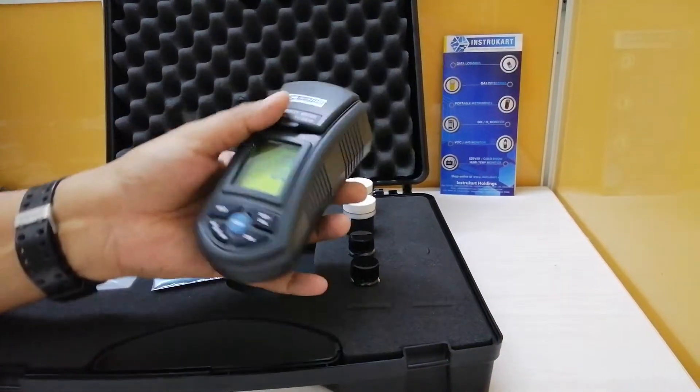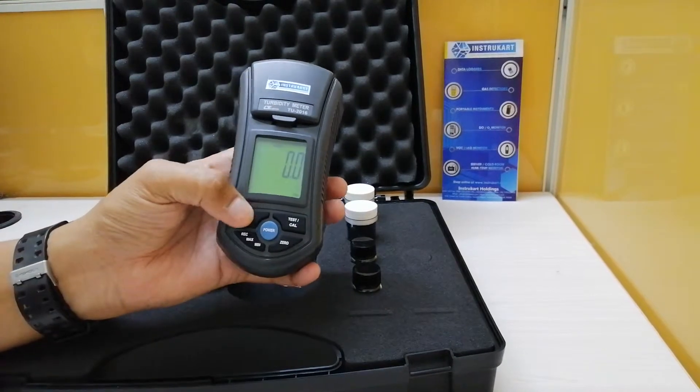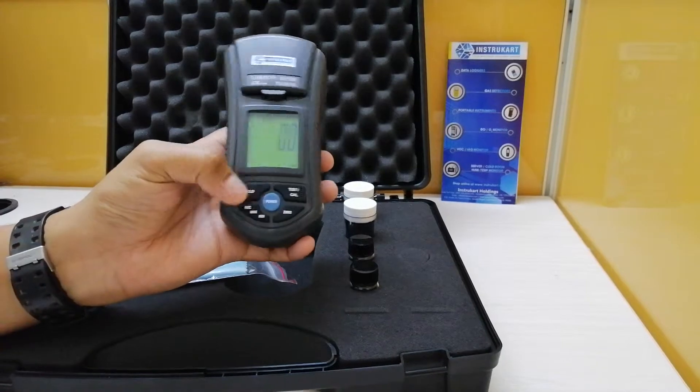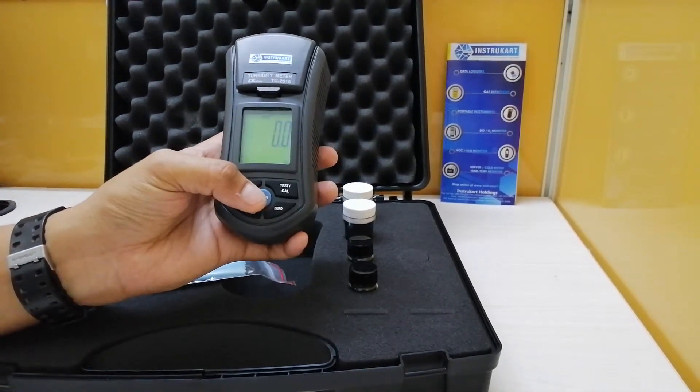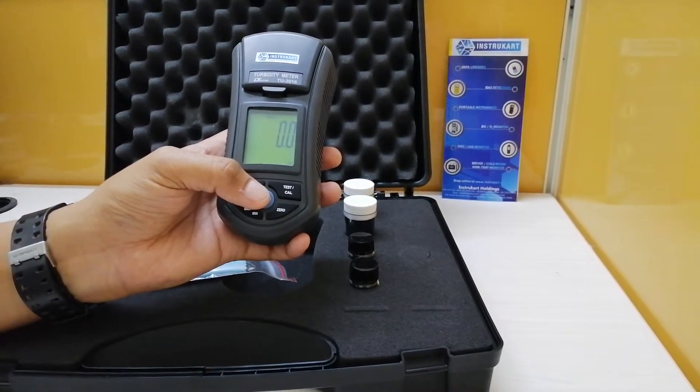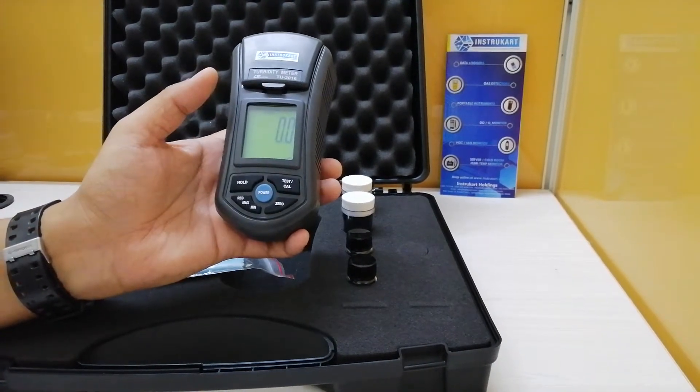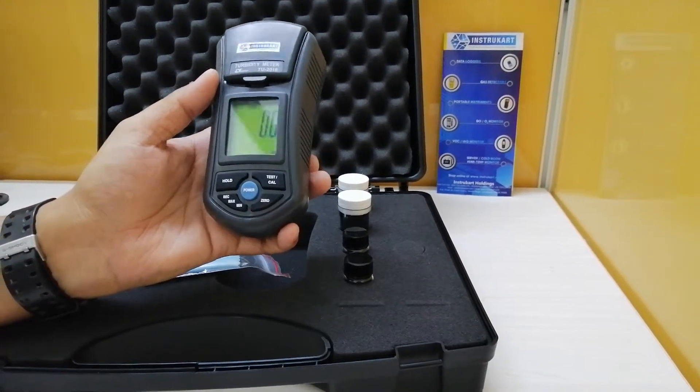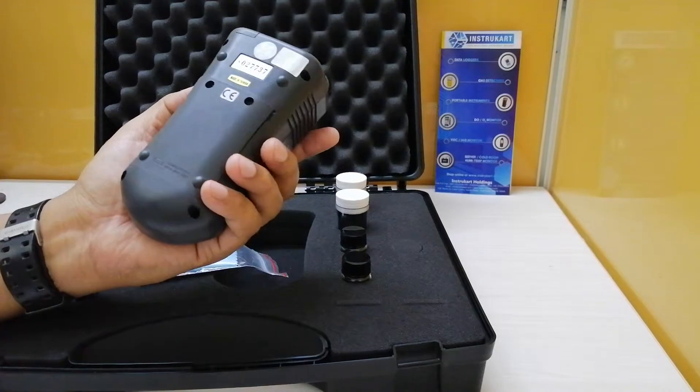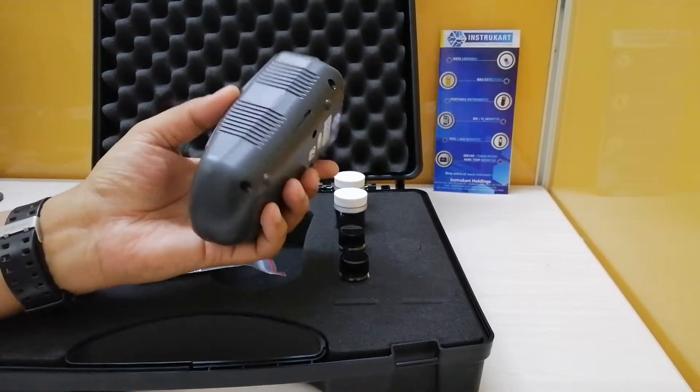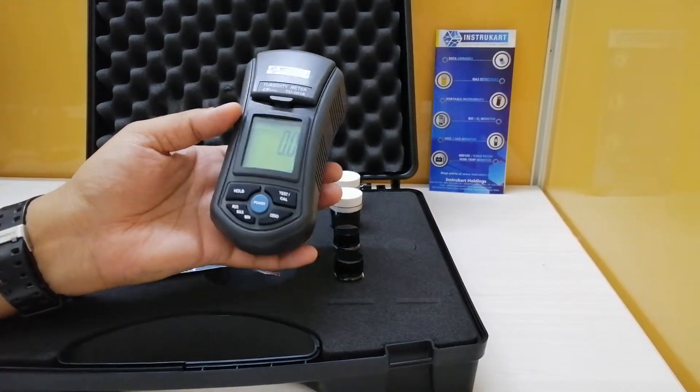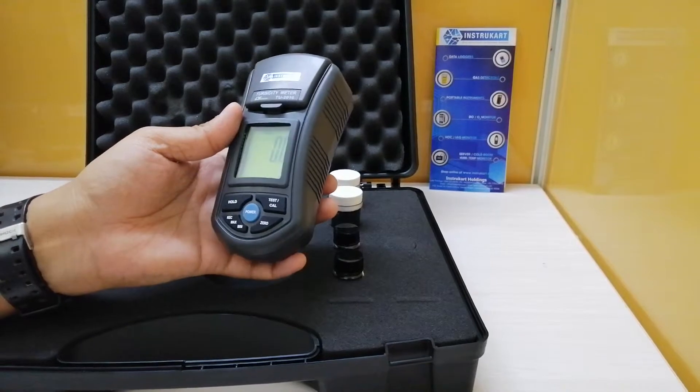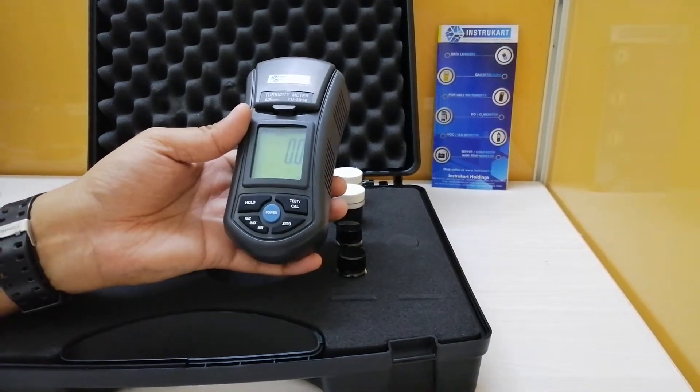Now the LCD is a very jumbo LCD and it has got an easy readout. It has got some keys on the front: hold key, test calibration, record, minimum, maximum, zero and power. And it has also got a resolution of the ISO 7027 compliant, which means that it is very well suited for testing in applications where you want to check the contamination of water with any suspended particles.